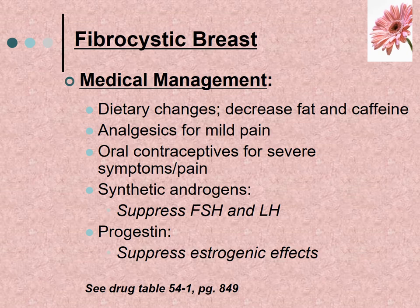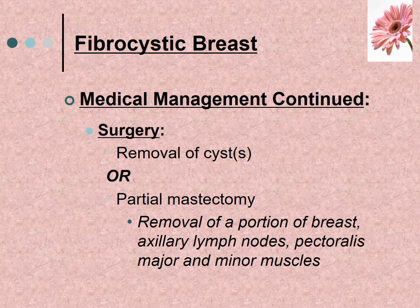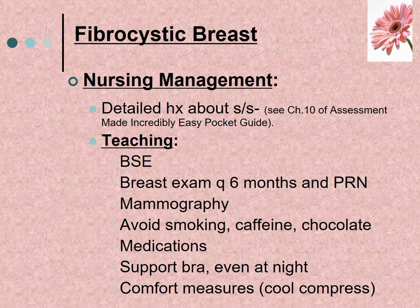Medical management includes dietary changes such as decreased fat and caffeine, analgesics for mild pain, and oral contraceptives for severe pain and symptoms. Synthetic androgens help suppress FSH and LH, and progesterone suppresses estrogenic effects. Surgery may be done to remove the cyst, or a partial mastectomy removing a portion of the breast, axillary lymph nodes, and pectoralis major and minor muscles — but only if the disease is widespread and causes severe discomfort.